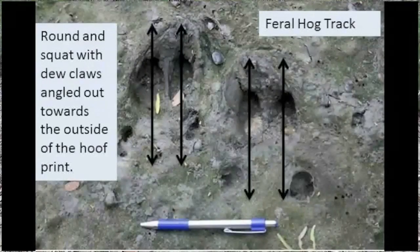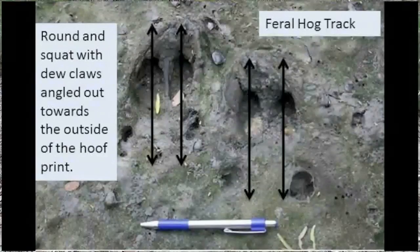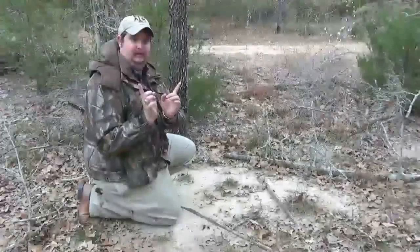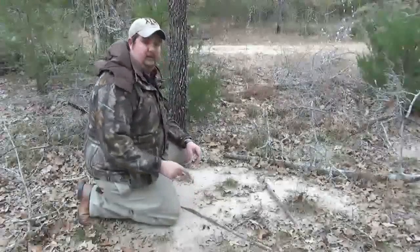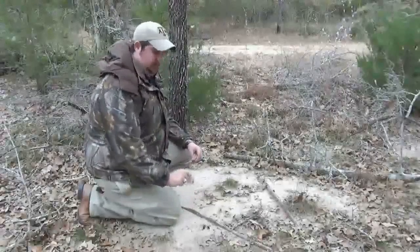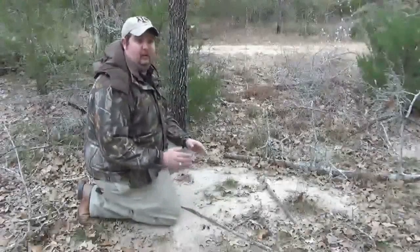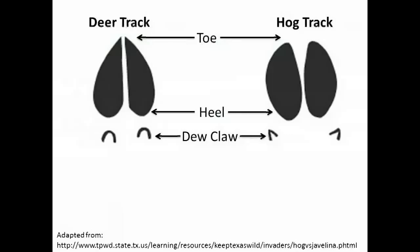Also, if you can find the dewclaw marks, feral hogs' dewclaw marks are usually going to be almost angled a little bit out like this, aiming towards sort of the outsides of the hoof print itself, whereas the deer's are going to be pretty much parallel with the hoof print itself.